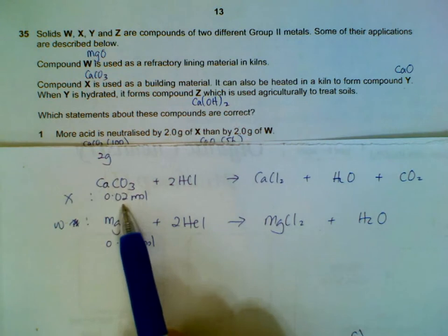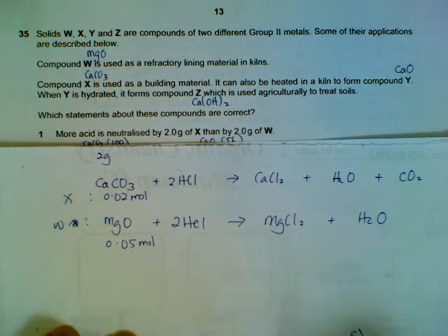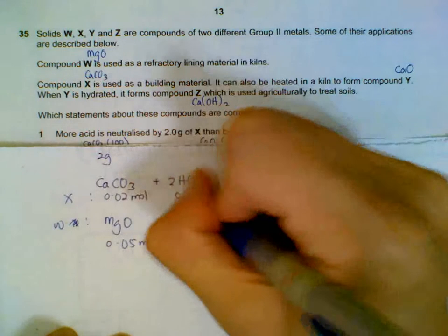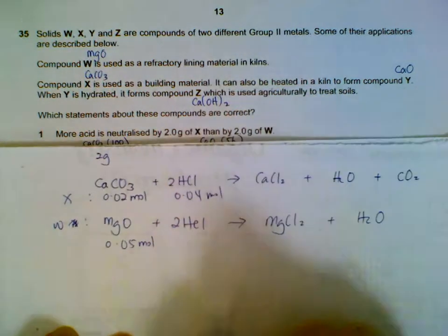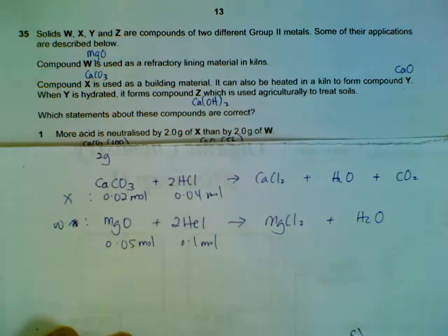Using two grams each divided by the molar mass, we will have 0.02 moles of calcium carbonate, 0.05 moles of magnesium oxide. Using the ratio, we will have 0.04 moles of acid for X and 0.1 moles of acid for W.